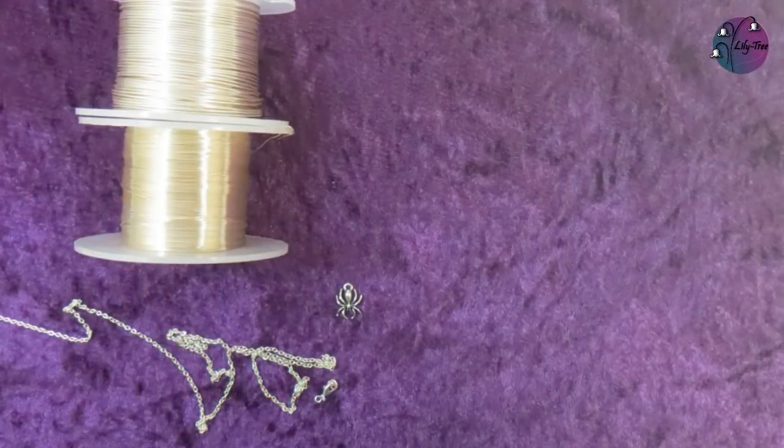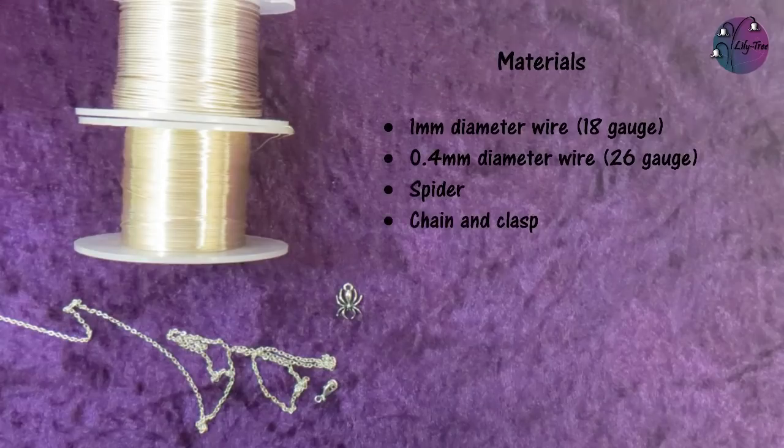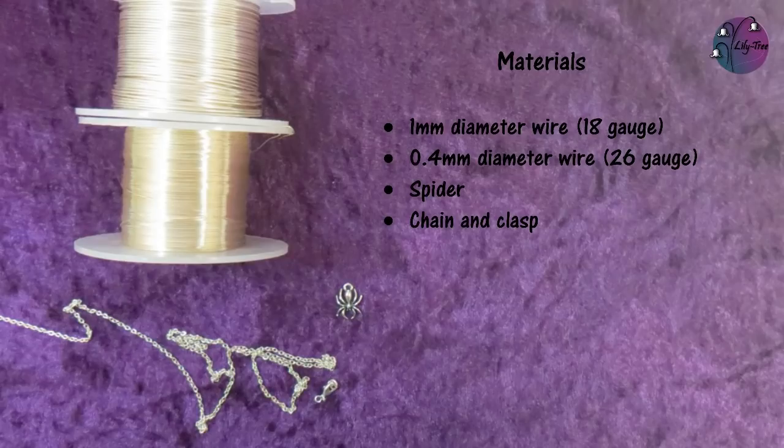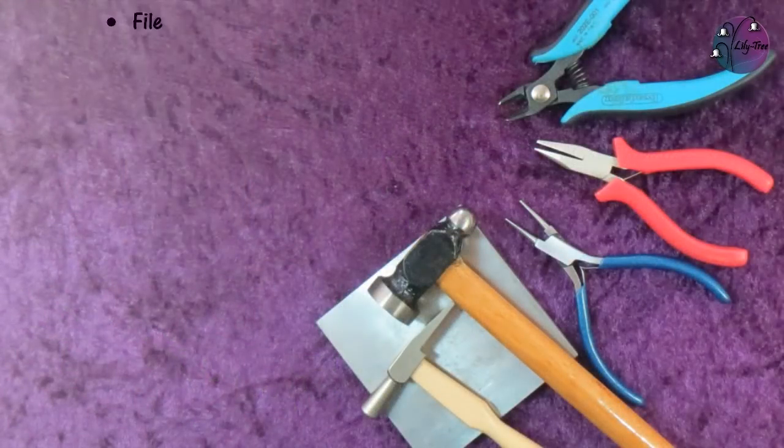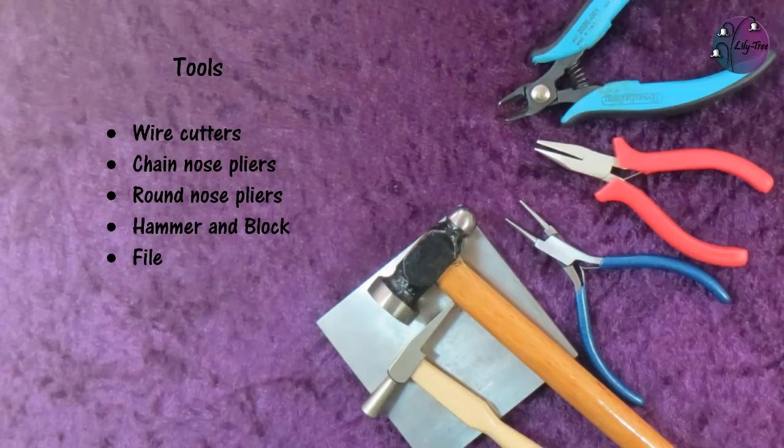Because my spider is silver colored, I'm going to match that and use silver plated wire for this project. I have 1 millimeter diameter which is 18 gauge and 0.4 millimeter diameter which is 26 gauge. I'll also need the chain for the necklace, some extra chain, and of course a spider. The tools I'm using are wire cutters, chain nose pliers, round nose pliers, a hammer and block, and a file.